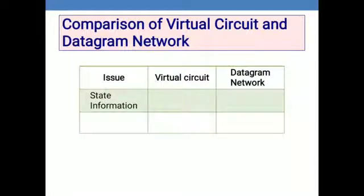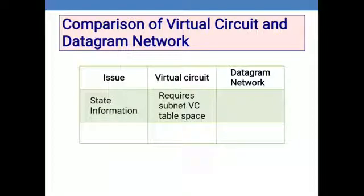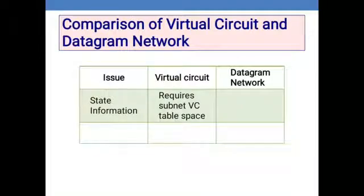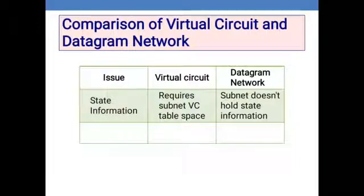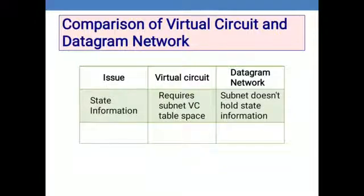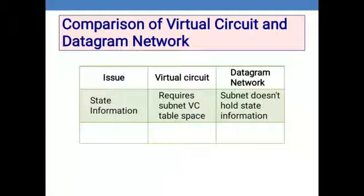Regarding state information: in virtual circuits, state information is required for the subnet VC tables and is maintained to update those tables. In datagram networks, the subnet does not hold state information. State refers to the condition of a particular router — whether it is idle or busy. Because virtual circuit requires circuit setup and pre-arrangement of devices, state information must be maintained.